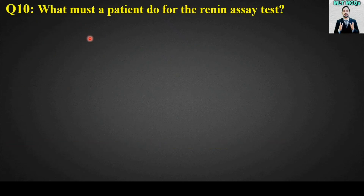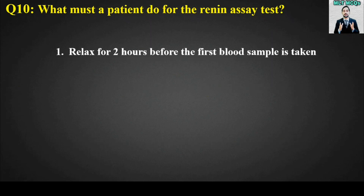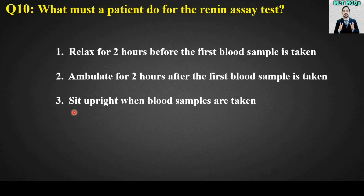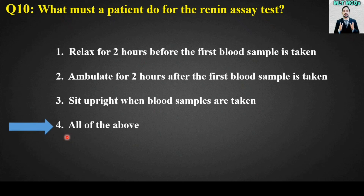MCQ number ten: What must a patient do for the renin assay test? Options are: relax for 2 hours before the first blood sample is taken; ambulate for 2 hours after the first blood sample is taken; sit upright when blood samples are taken; all of the above. The right answer is option number four — all of the above.